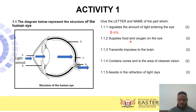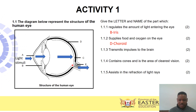Question 1.1.2 asks which part supplies food and oxygen to the eye. The labeled part D is the choroid, which contains blood vessels that supply nutrients and oxygen to the eye — so the answer is D, choroid. Question 1.1.3 asks which part transmits impulses to the brain. The image forms on the retina, is converted into an impulse, and sent via the structure labeled E — that is the optic nerve.